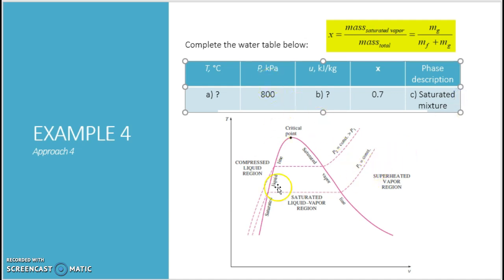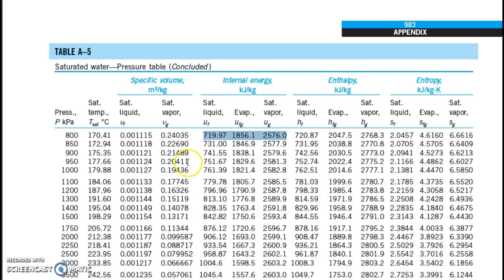And given to your 800 kilopascal, so you are going to read from your table E5. So this is your table E5, given 800 kilopascal, what is the value of your internal energy? As you can see here, you have your UF, your UFG and your UG.